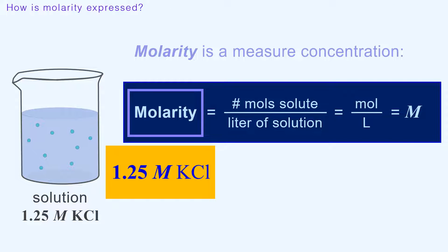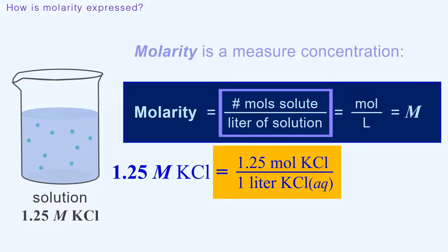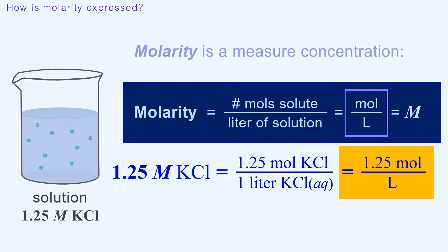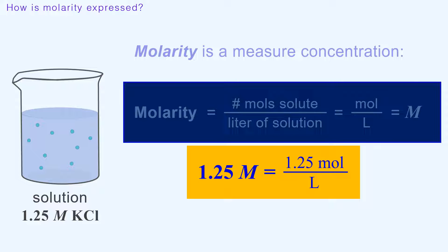1.25 molar KCl tells us there are 1.25 moles of KCl dissolved for every 1 liter of solution, or 1.25 moles per liter. 1.25 molar represents 1.25 moles per liter.